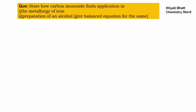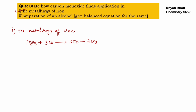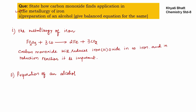Carbon monoxide finds application in the metallurgy of iron because it reduces metallic oxide to metal. Second application: CO reacts with hydrogen gas with zinc oxide catalyst at 450°C to produce methyl alcohol (CH3OH), making it important in the preparation of alcohol.